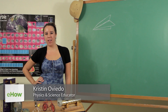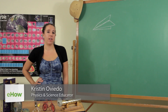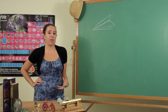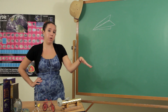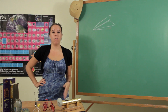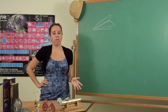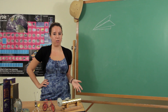Hi, I'm Kristin Oviedo and this is what factors affect the flight of a paper airplane. When you study any object that flies, or even just coasts or floats, all of them are going to have four main forces that are acting upon them at all times.